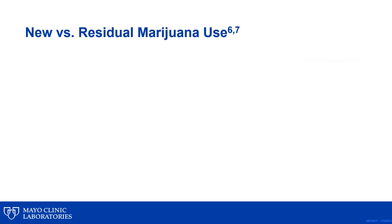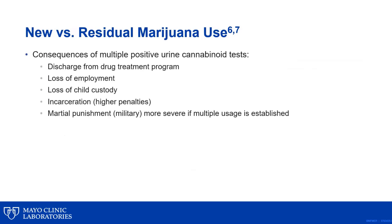Since marijuana is lipophilic and has a long elimination half-life, it can be detected in urine for weeks to months after stopping usage. As a result, a physician often needs to be able to distinguish between new usage of marijuana versus residual marijuana. It is important since the consequences of multiple positive urine cannabinoid tests could mean discharge from an addiction management program, loss of employment, loss of child custody, or even more severe criminal punishment.